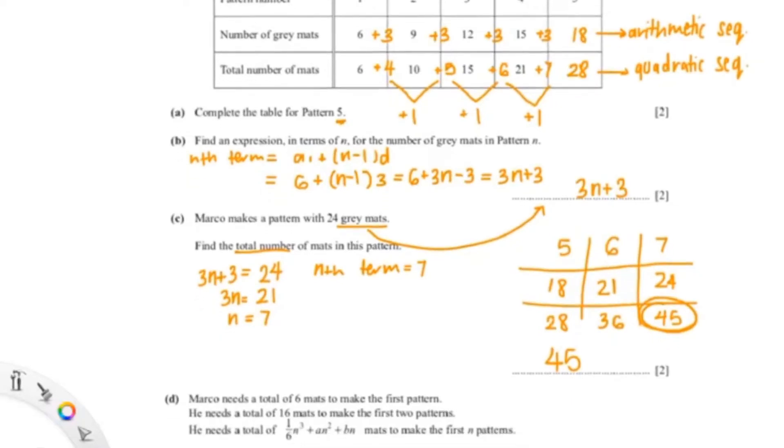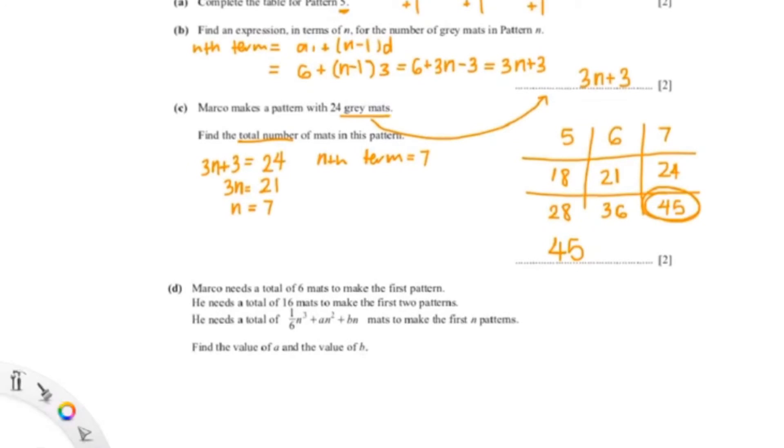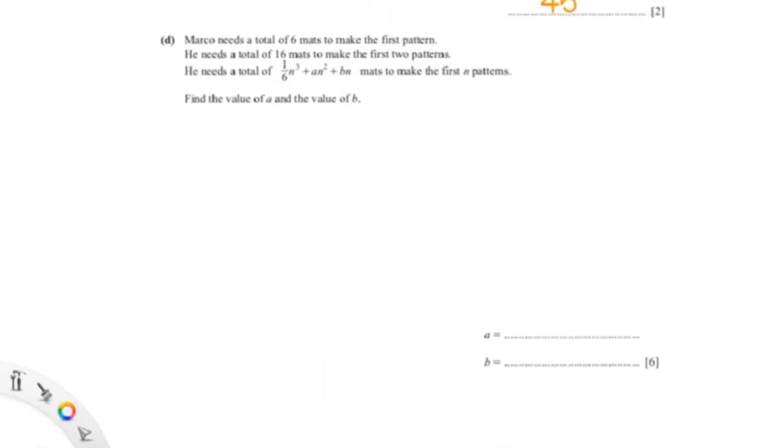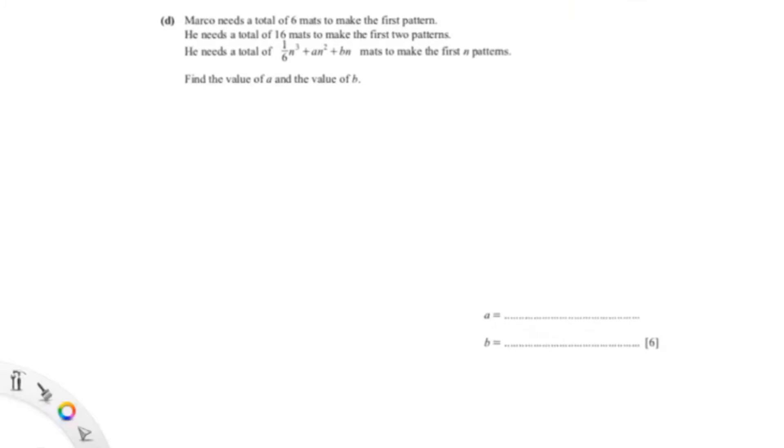So now let's move on to the next question. It looks pretty long. It's a 6 mark question. Okay, so it might be a bit tricky, but don't worry, I'll guide you step by step. So let's see what the question is asking. 6 mats is used to make the first pattern. 16 mats is used to make the first two patterns. And to make the first n-pattern, the formula is given. Okay, so that is n equals 1 and n equals 2.